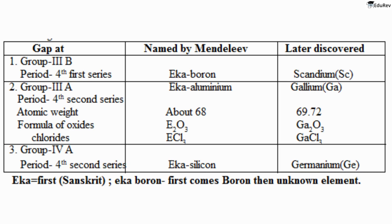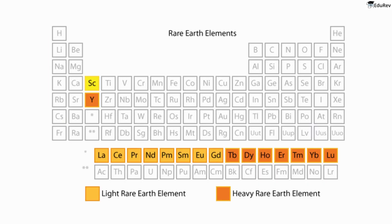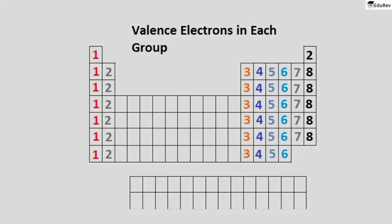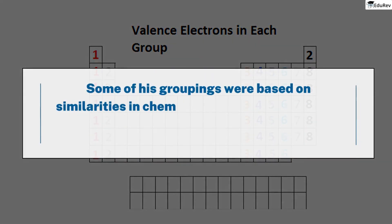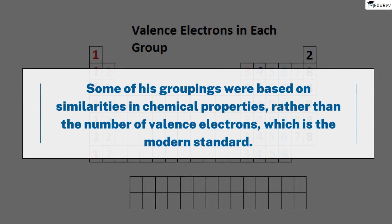Mendeleev's periodic table also had a few differences from the modern version. For example, he had placed the rare earth elements in a separate table, rather than within the main table as is done today. Additionally, some of his groupings were based on similarities in chemical properties, rather than the number of valence electrons, which is the modern standard.